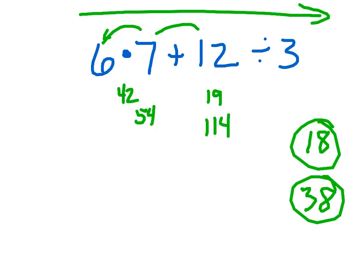So mathematicians had to come up with what's called an order of operations — a specific order to do the addition, subtraction, multiplication, division, and all kinds of other symbols and exponents and all that, so you always get the same answer.